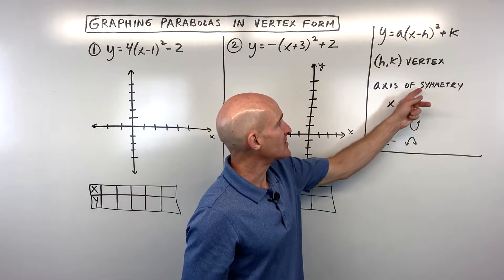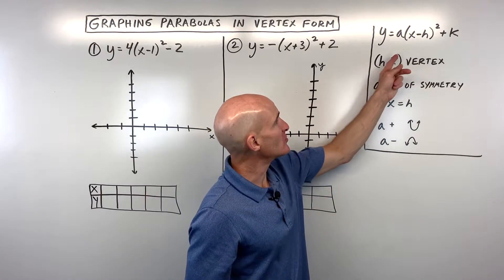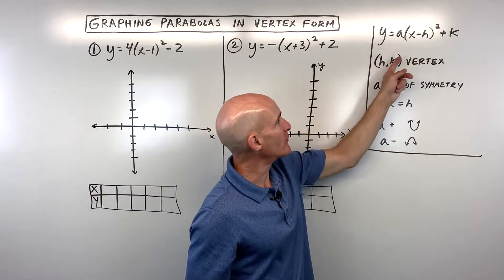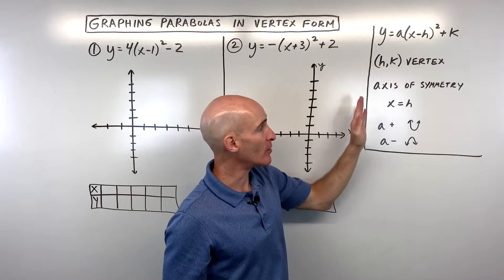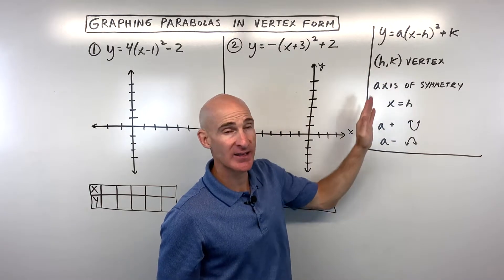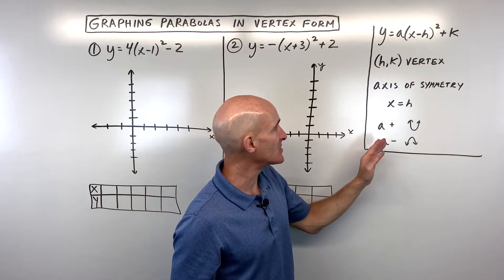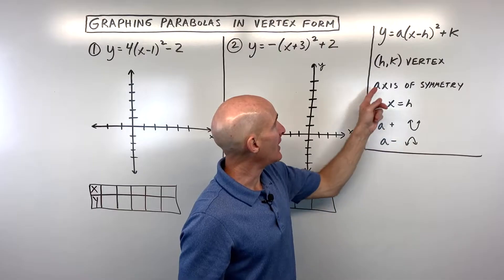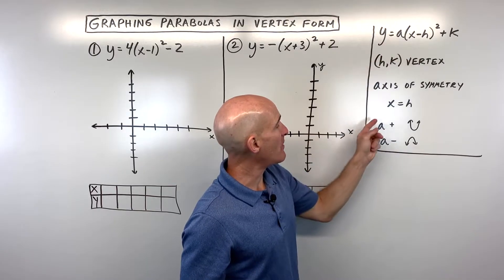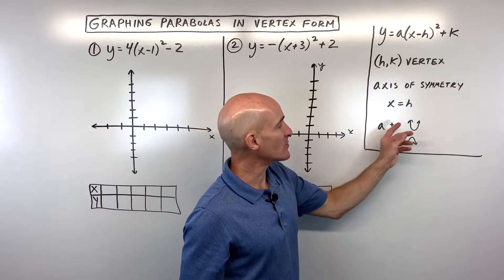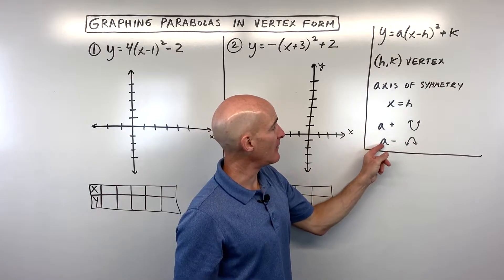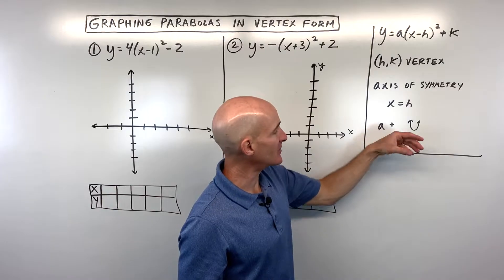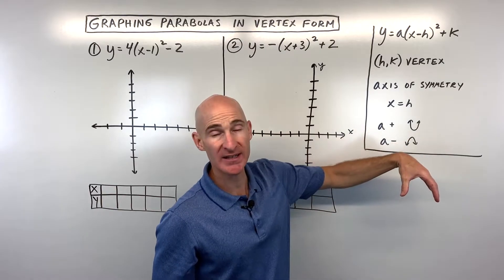The axis of symmetry goes through the x-coordinate of the vertex. It's going to be the equation x equals h. Remember, x equals lines are vertical lines. If the a value is positive, it tells us the parabola is opening up. If the a value is negative, it tells us it's opening down.